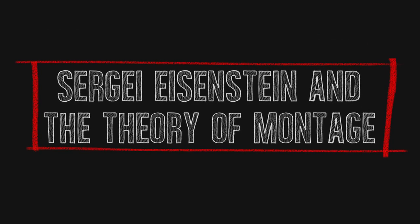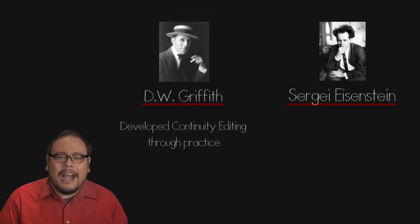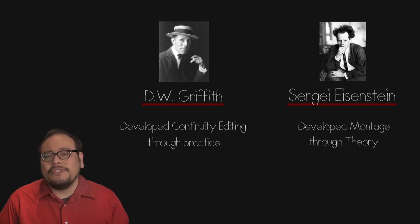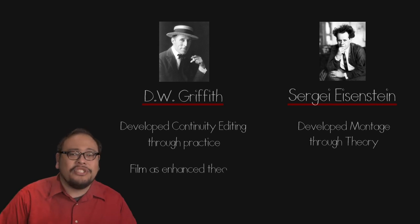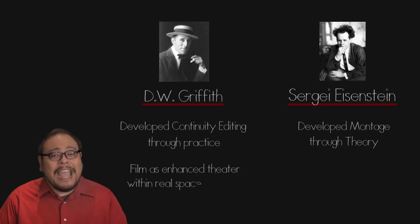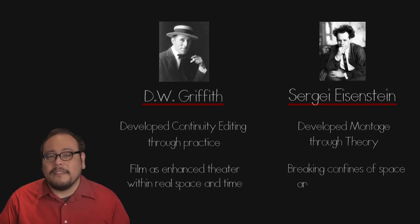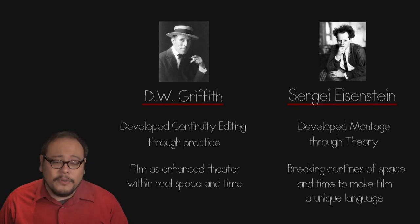Sergei Eisenstein along with D.W. Griffith are the two pioneering geniuses of early cinema. Though Griffith would create the language of continuity editing through practice and practical problem solving, Eisenstein would approach film intellectually. Griffith and his American contemporaries used editing to enhance emotional impact almost as an extension of 19th century theatrical methods, whereas Eisenstein used editing to break free of the confines of time and space and communicate abstract ideas in a new and modern way.